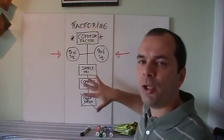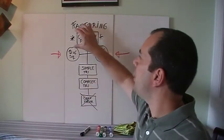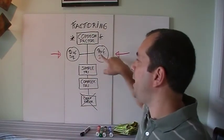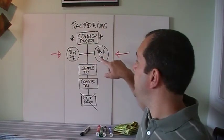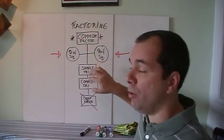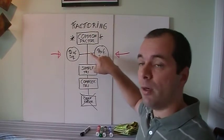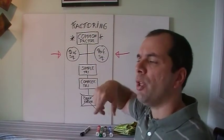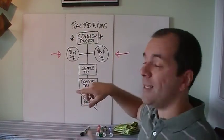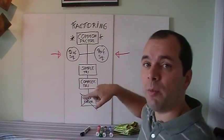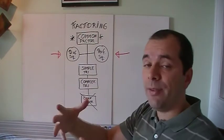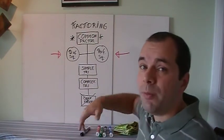In our previous videos we've covered pretty much all of factoring. We always start with common factor because it makes things a lot easier. Then we check for special cases, which we'll cover today. After that, we go to simple trinomial — if it starts with x squared, find two numbers that multiply to the last and add to the middle. If not, check for complex trinomial. If none of those work, it may just not factor.